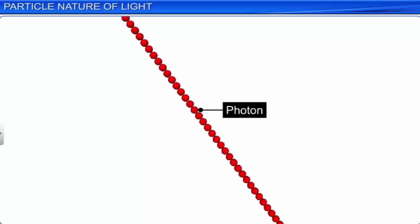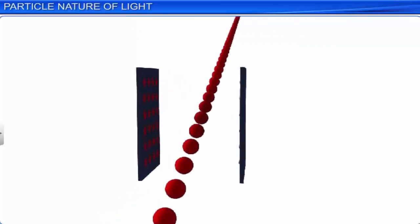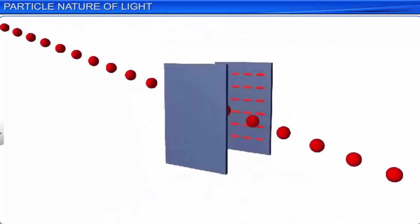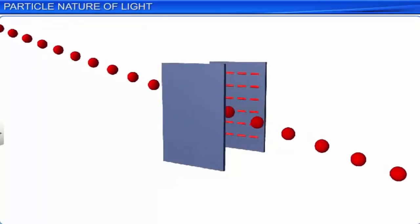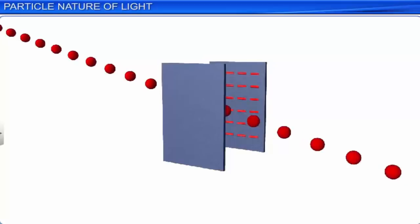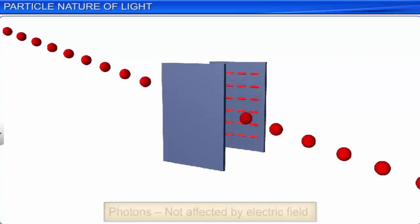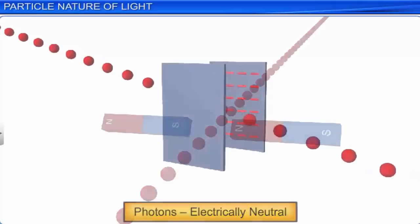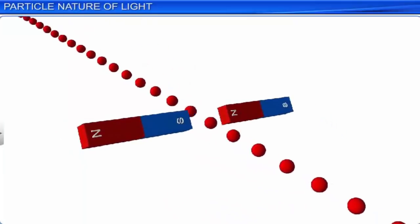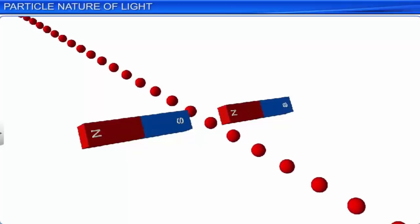The rest mass of a photon is zero. Photons pass undeviatedly through an electric field, which can be created by the charged blades of a capacitor. Hence, photons are not affected by electric field, which means they are electrically neutral. The photons also travel undeviatedly in the region between two magnets, and so they are not affected by magnetic fields as well.